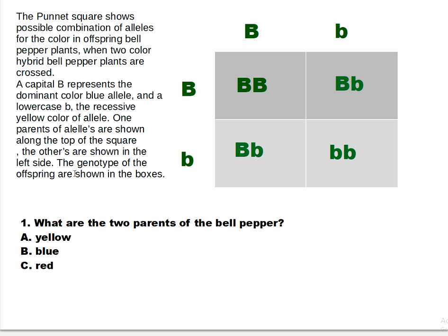The genotypes of the offspring are shown in the boxes — BB, Bb, Bb, and bb — meaning blue, blue, blue-yellow, blue-yellow, and yellow-yellow. Here's question number one: What are the two parents of the bell pepper? Is it yellow, is it BB blue, or red? The answer is BB blue. Pretty easy!